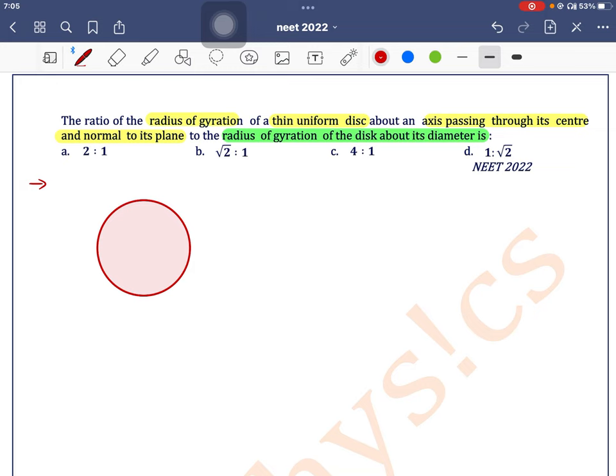First scenario: we have a disc with mass M and radius R. The axis of rotation is passing through the center of mass and perpendicular to the plane. In the second scenario, the axis of rotation is passing through the diameter for the same disc. Let's say the moment of inertia is I2.